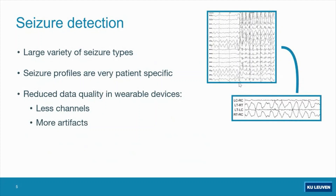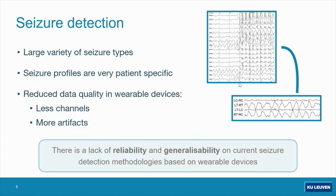We have a big variety of seizures and every seizure is patient-specific, so we have different profiles related to each patient. There are some general trends but not all seizures are the same. In order to monitor patients in the long term, we have started using mobile devices. Mobile devices are not full scalp EEG devices; they are placed in different positions on the head, giving us fewer channels and more artifacts because patients are moving, sleeping, etc.